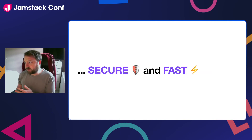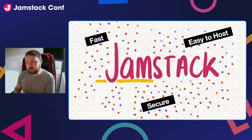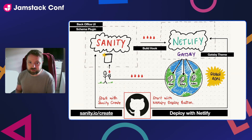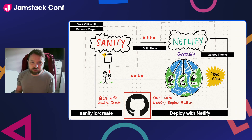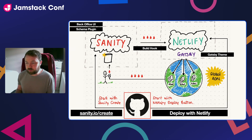Of course I turned to my good friend the Jamstack, because Jamstack websites allow us to develop web applications that are fast, secure, easy to host, and scalable. This slide gives you a high-level idea of how this is going to work. We're going to use Sanity as the data management platform. A lot of people tend to use Sanity as a CMS, but Sanity is so flexible that you can create all kinds of different applications with it — as we've proven here by building a blood sugar management application.